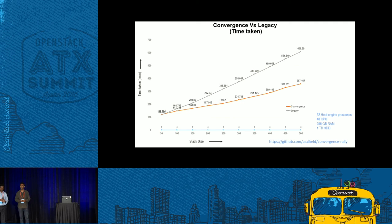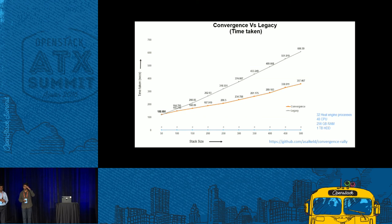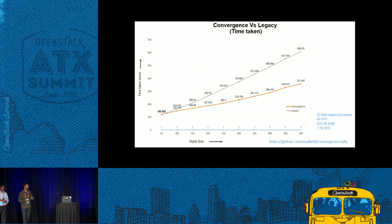You said convergence will be enabled by default in Newton. If you're already using the legacy engine, do you have to migrate your stacks or will there be a migration process, and would it require downtime? We are writing scripts to migrate the existing stacks to convergence. It can be done, and we are in the process.